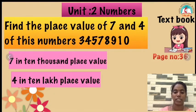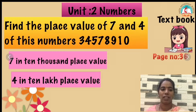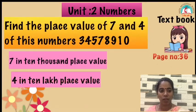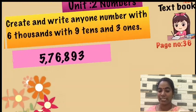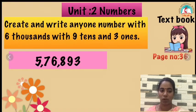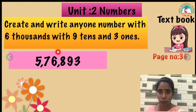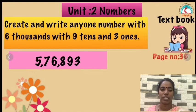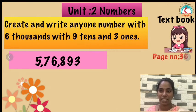Create and write any one number with 6 thousands, 9 tens, and 3 ones. You can choose any numbers, but the 1,000s place must be 6, the 10s place must be 9, and the 1s place must be 3. Look at this, children — the answer is 5,76,893.